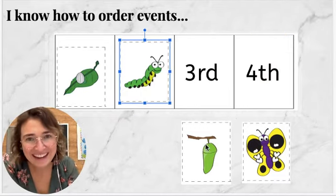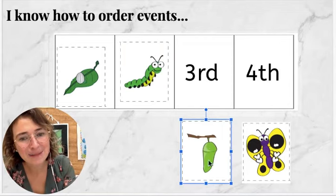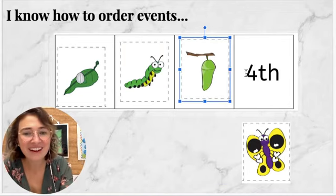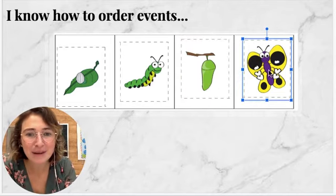Third, next, the caterpillar makes a cocoon. Finally, fourth, it becomes a butterfly.